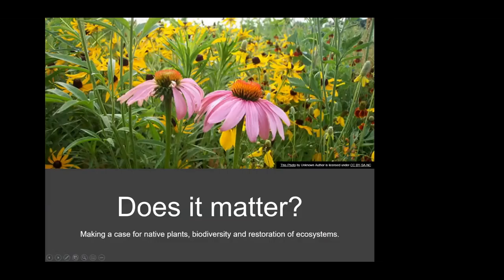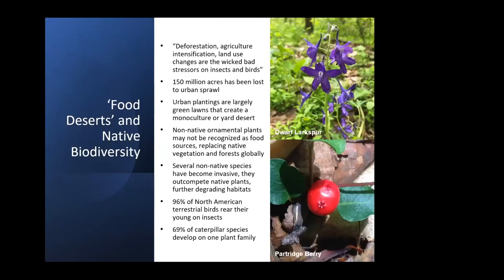So does it matter? I'll make a little bit of a case here for using native plants, biodiversity, and trying to restore ecosystems. Deforestation, agriculture intensification, and land use changes have really put a stress on insects and birds. Both insect and bird populations are way down. There's a lot of urban sprawl where people plant just green lawns, monocultures, and non-native plants. Even in rural areas, a lot of the native species are rather hard to find — it's still a lot of monoculture.